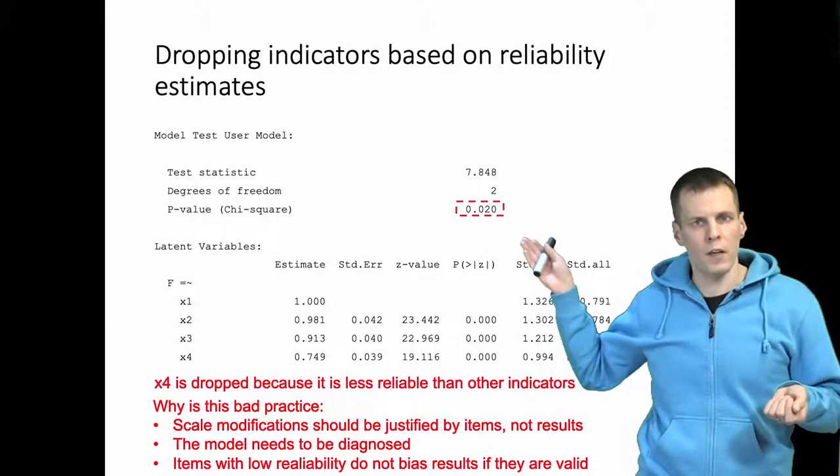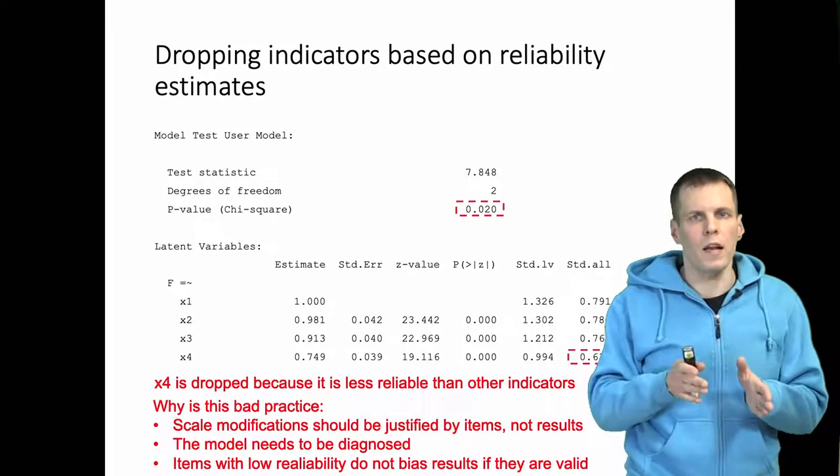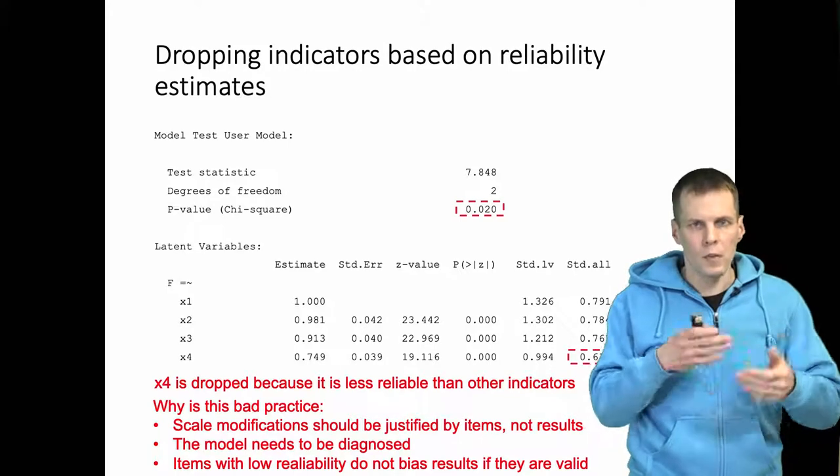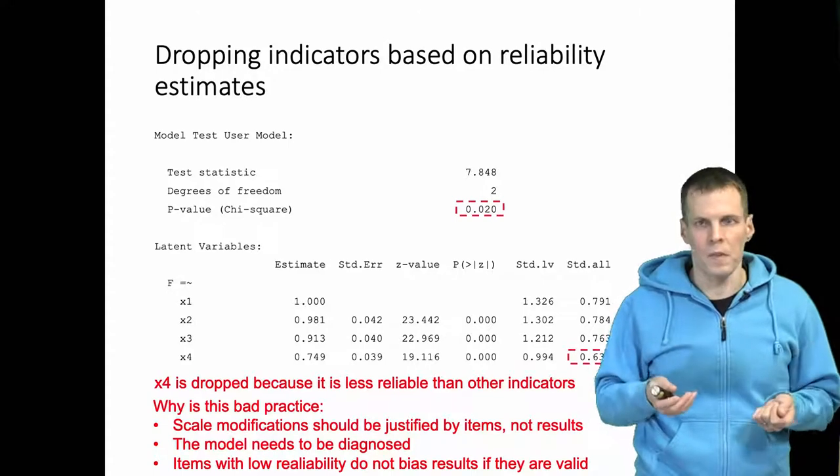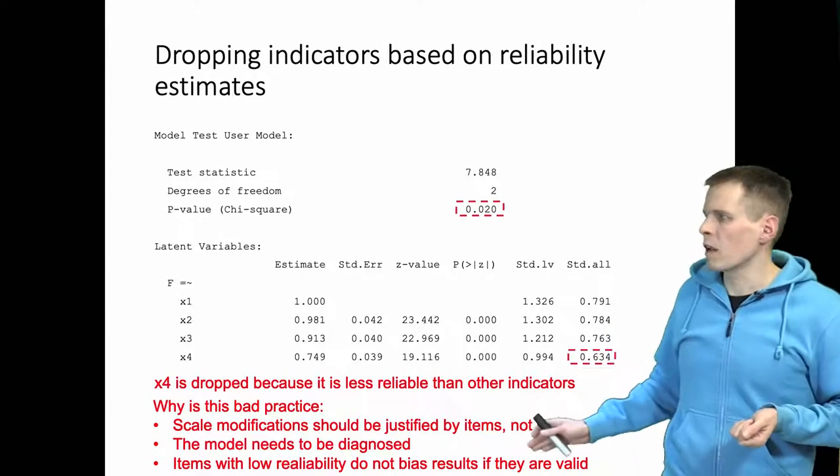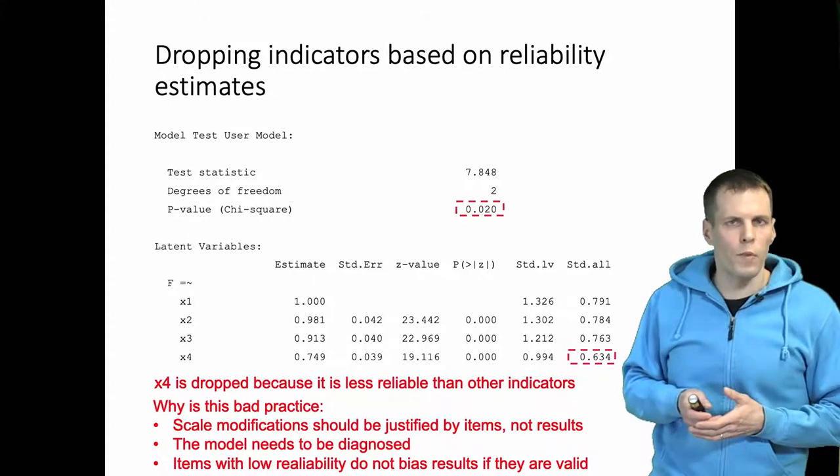So the fact that we have a significant chi-square means that there is dimensionality, and dimensionality needs to be explored and addressed instead of just dropping an indicator based on reliability estimate. And items that are unreliable, if the model is correctly specified, they wouldn't lead to bias in any case.